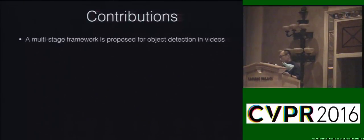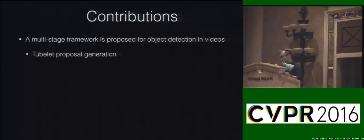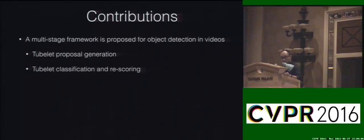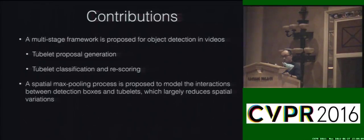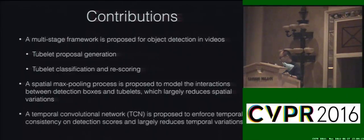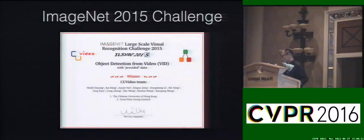There are three main contributions of our work. We propose a multi-stage framework for this task, including tubelet proposal generation, classification, and rescoring. We also propose a spatial max pooling process to model the interaction between the still image detections and the tracking results, which largely reduces the spatial variations. We also propose a temporal convolution network to reduce the temporal variations.